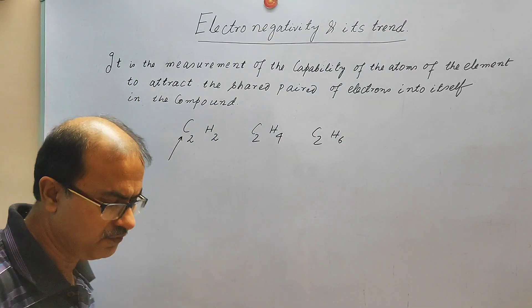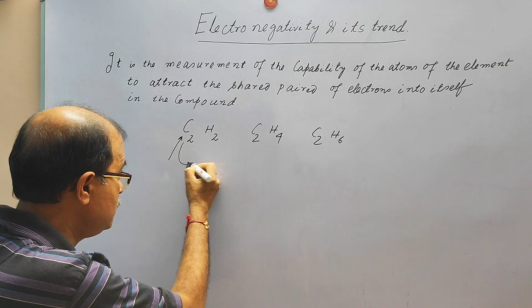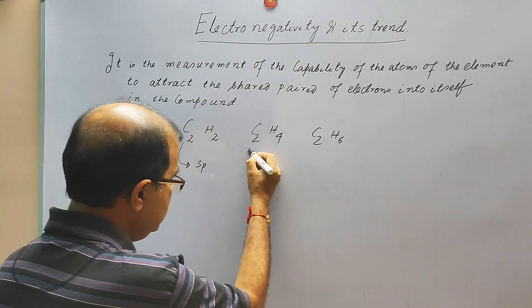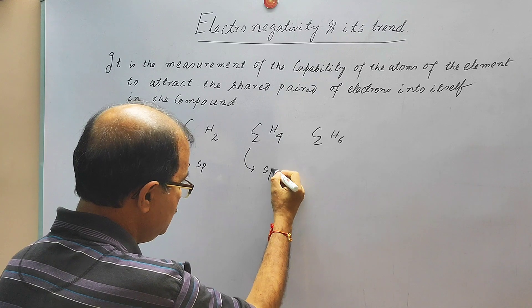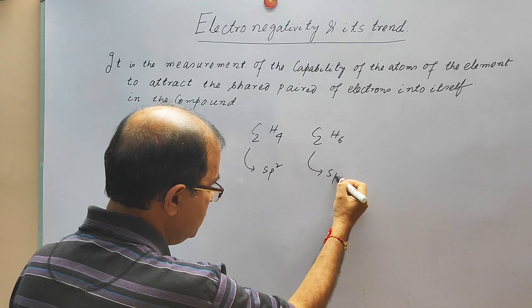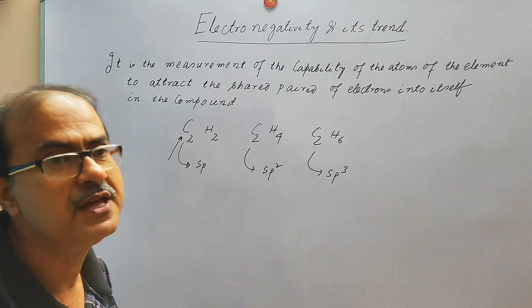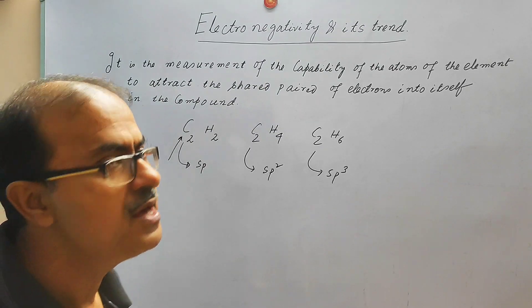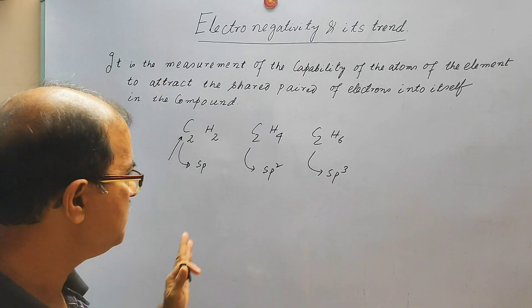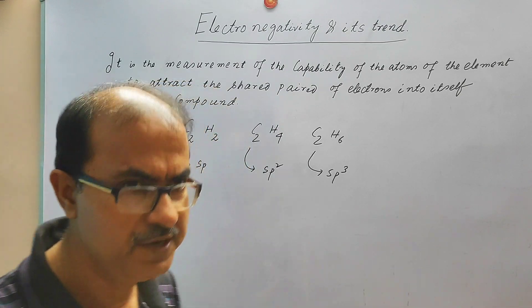This is because the carbon atom in C2H2 is sp-hybridized, the carbon atom in C2H4 is sp2-hybridized, and the carbon atom in C2H6 is sp3-hybridized. Due to the difference in hybridization, you can see the same element has a different type of electronegativity.